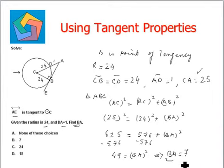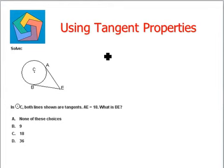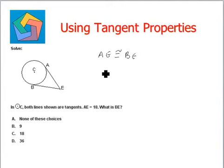This is our final answer, which can be seen in option B. Moving on to the next question: solve. We are given a circle with center C. E is an external point and tangents AE and BE are drawn from it. From the second property, tangents drawn from the same external point are always congruent. So AE is congruent to BE. Since AE is 18, therefore BE is also 18. This is the final answer, seen in option C.